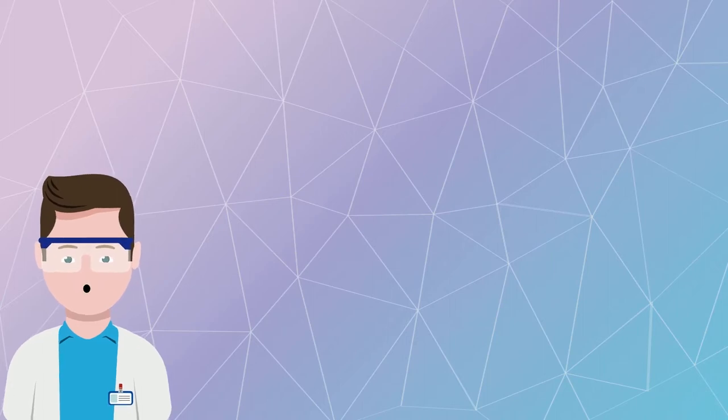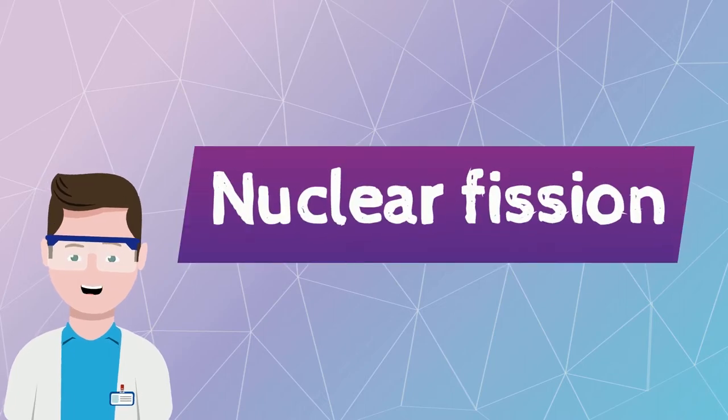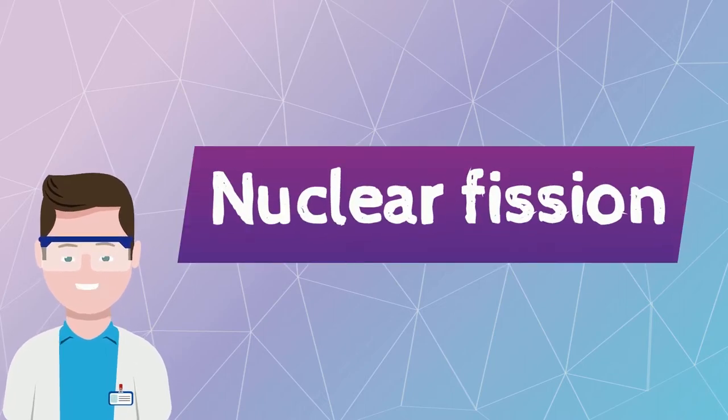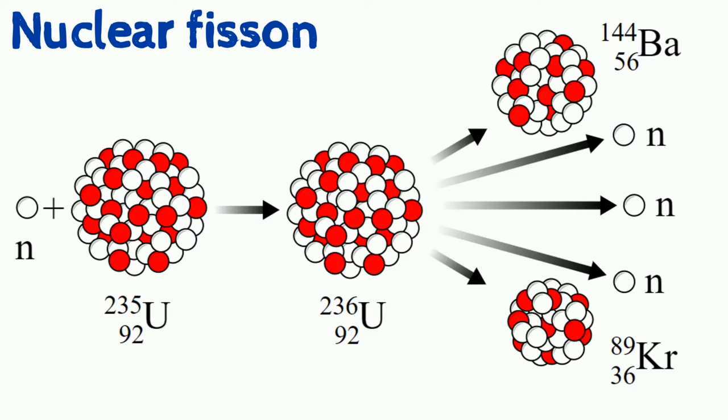But before talking about the atomic bomb, first of all, we have to understand an important concept in chemistry, which is nuclear fission. Do you know what is that? Nuclear fission is the process of splitting apart nuclei. When large ones, such as uranium-235, fission, energy is released.